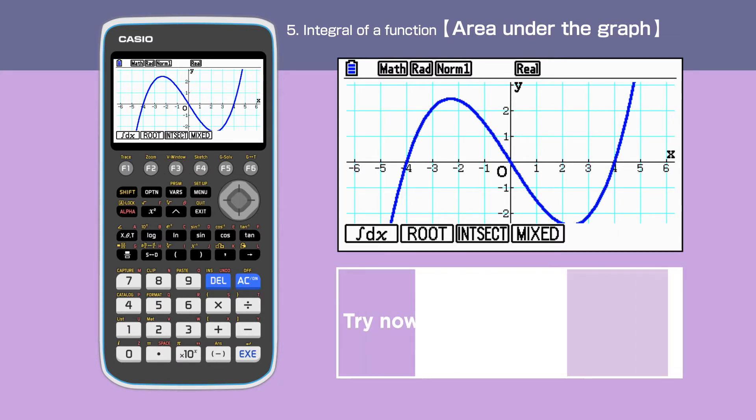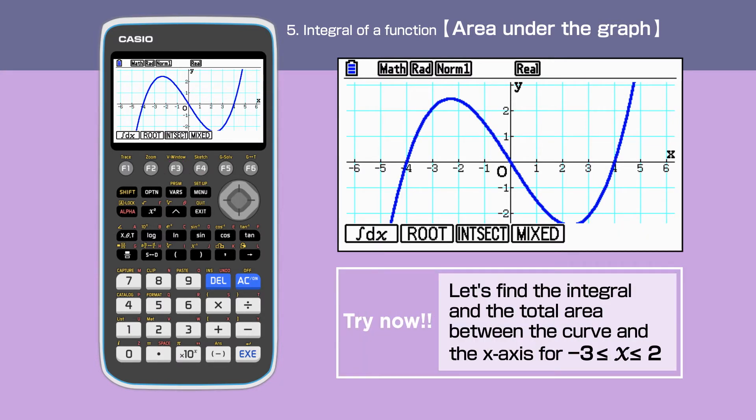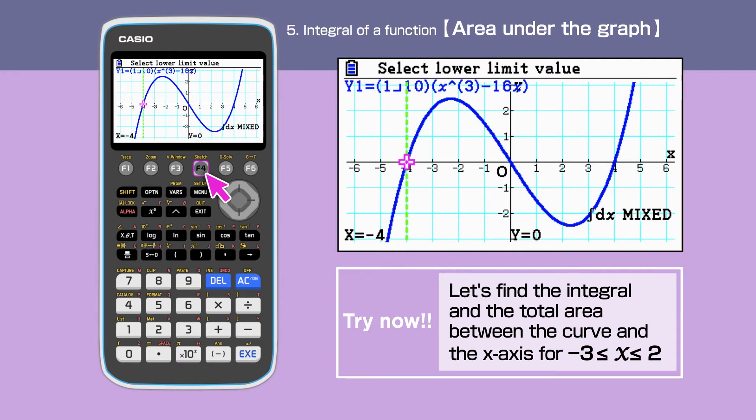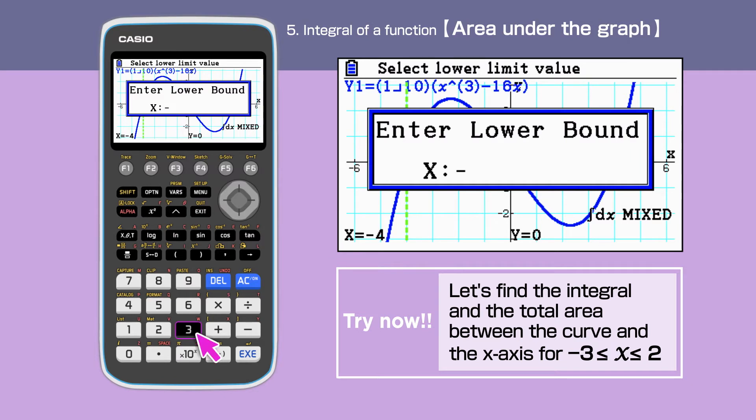First, we will find the integral as well as the total area between the curve and x-axis for the interval between x equals minus 3 and 2. Press F4 to select mixed. On the screen, we have a pink cursor and a green vertical line. Enter minus 3 for the lower bound for x. Make sure to use bracket minus to indicate a negative value.